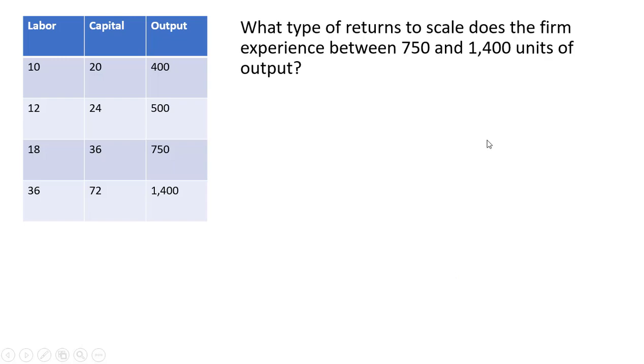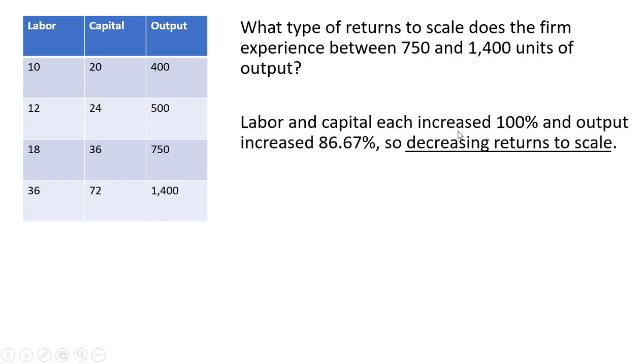And in our last example, we're going to look at what happens when this firm goes from 750 units of output to 1,400 units of output. I'll show that labor and capital, in this case, each increased 100%.